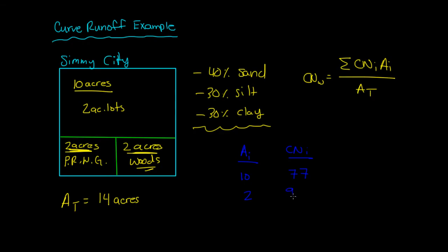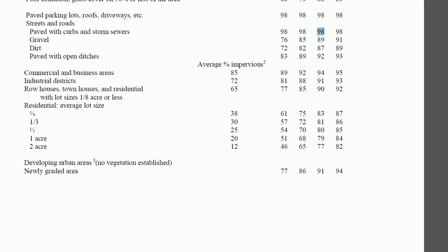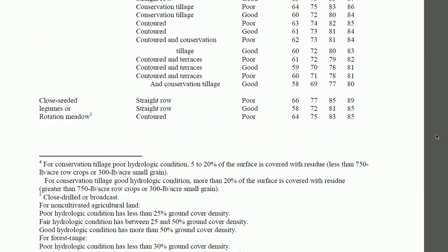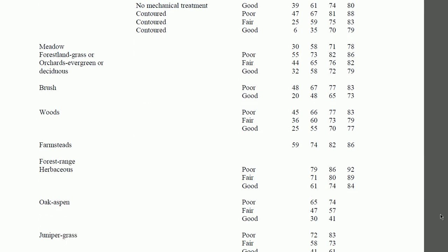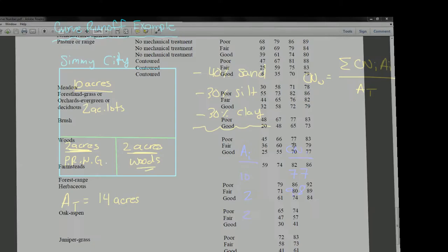And then finally you have 2-acre lots of woods. And then if you go to this chart, woods would be right here. And there's 3 different hydrologic conditions: poor, fair, good. But since the problem didn't tell us what the hydrologic condition is, we can assume it to be fair. And it was group C, so curve runoff number is 73.